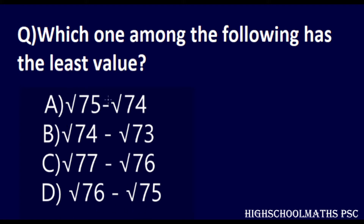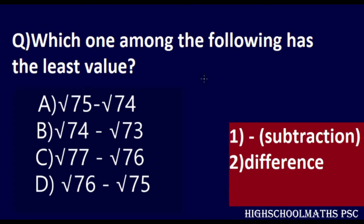Now if you look at these numbers, you might think the answer is simply √75 − √74. That is not the correct approach. We will try to do a rationalization calculation to check the two conditions. The first condition is subtraction, and the second condition is the difference.